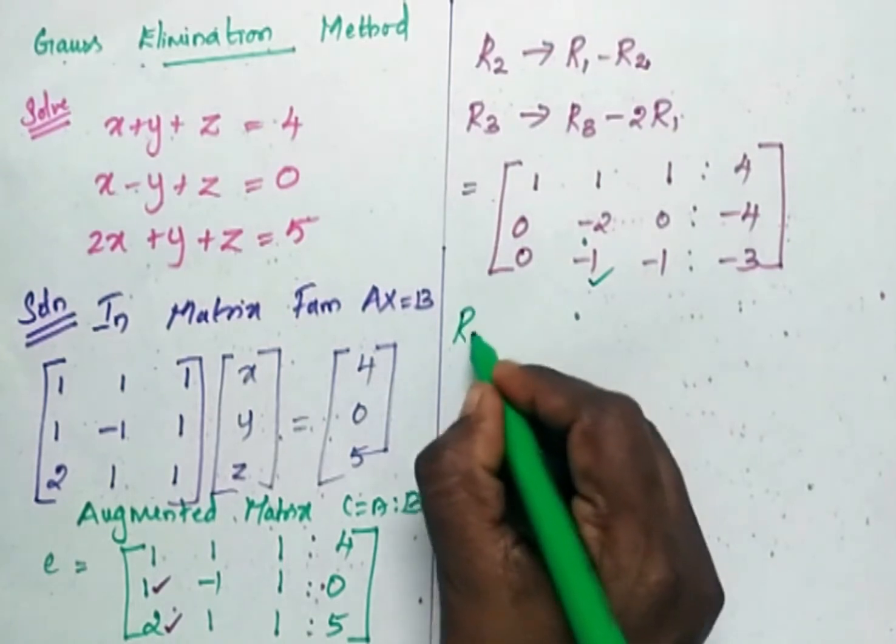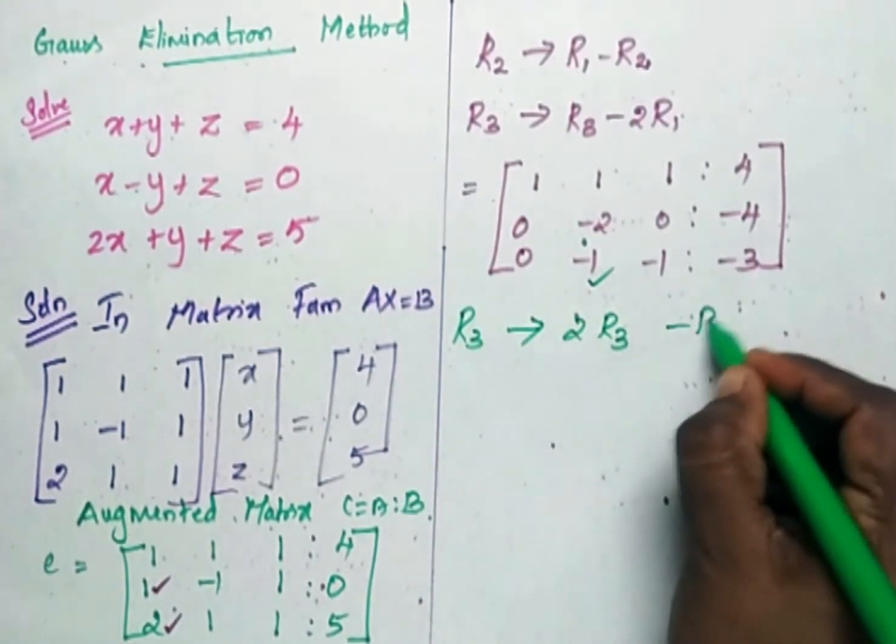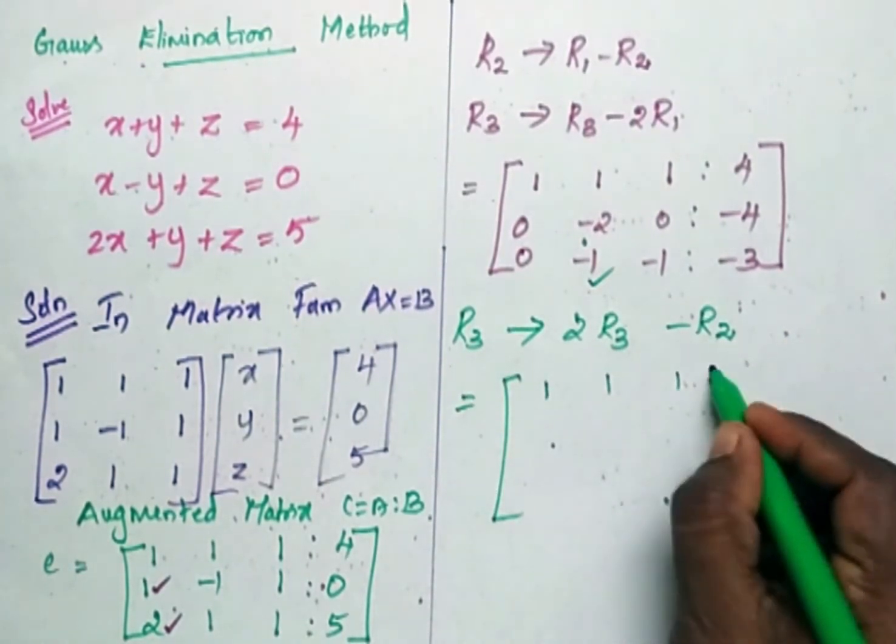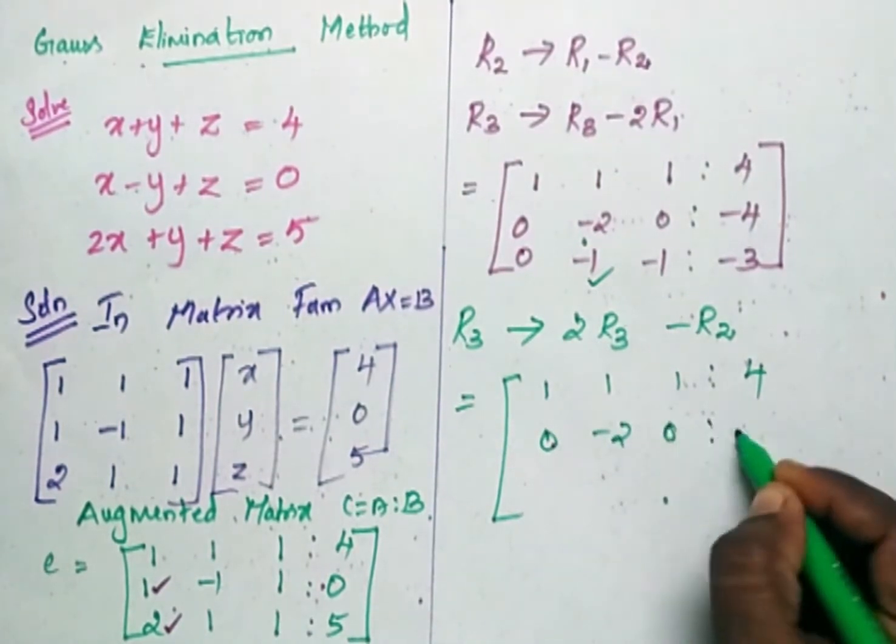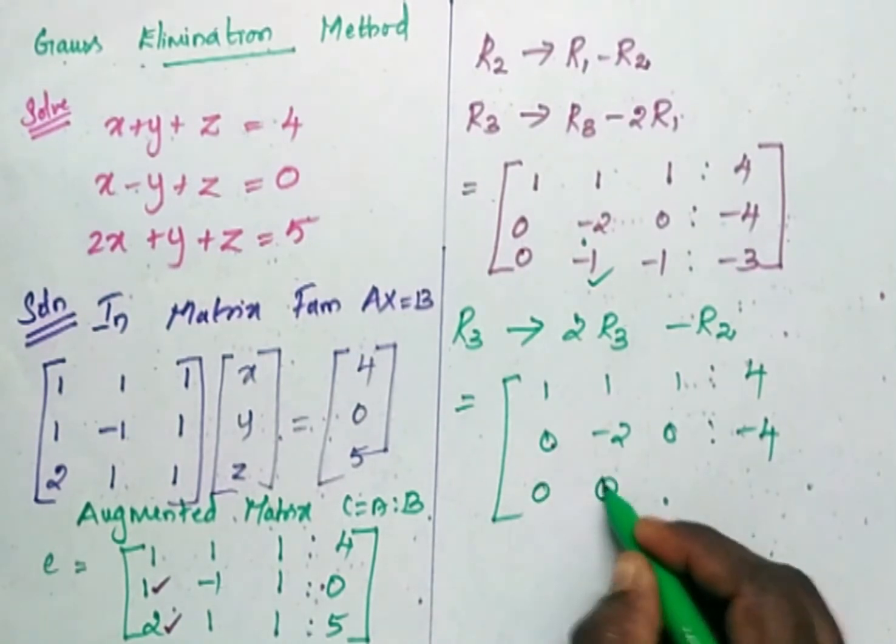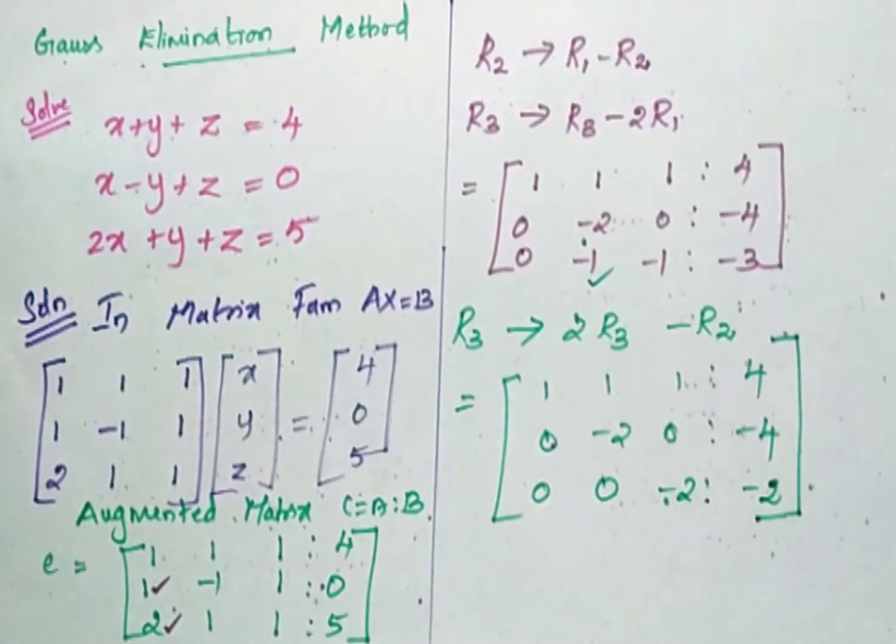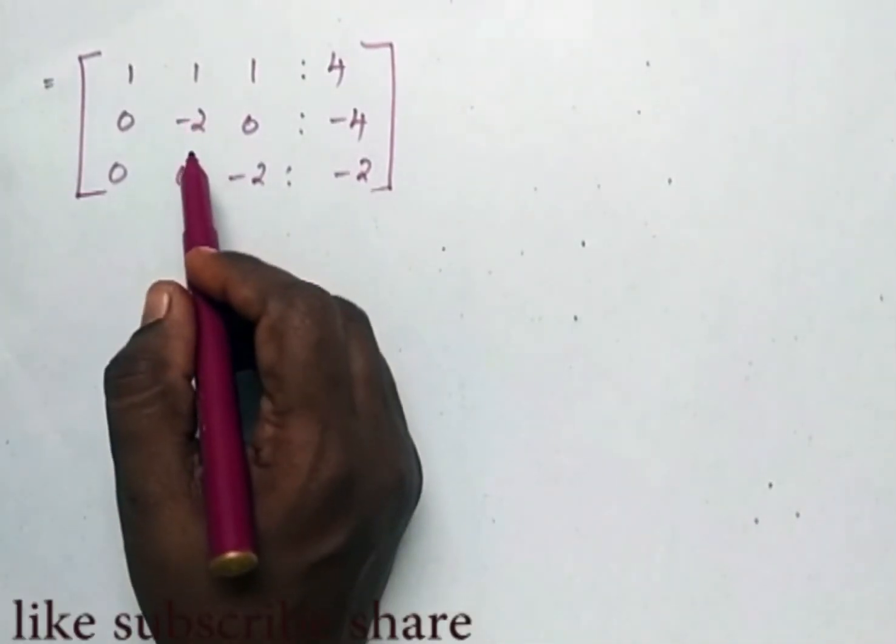So now my R3 is replaced as 2R3 minus R2. No change in R1, no change in R2. Now my R3 becomes 0, 0, minus 2, and here it is again minus 2. This is the matrix which we have obtained.